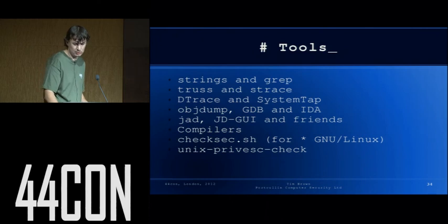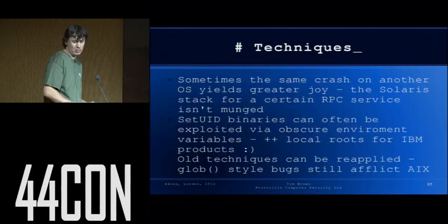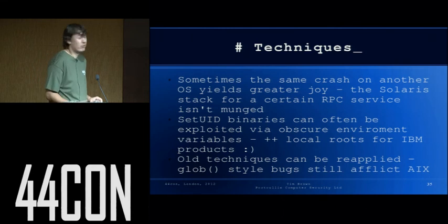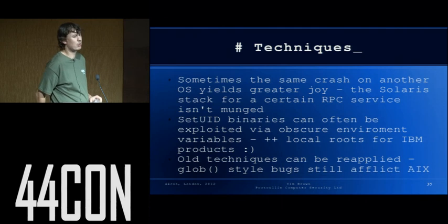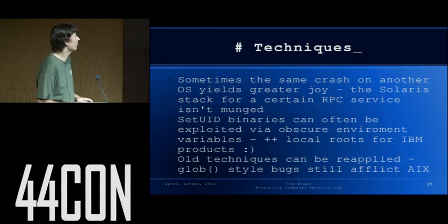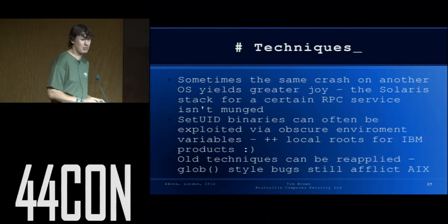Some techniques. Sometimes if you recreate the crash on another OS you might get more joy with it. Binaries can always be exploited via environment variables — that's definitely the case on IBM. We've got at least three local root exploits that are essentially based on applications that poorly trust environment variables and do silly things with them. Old techniques can be reapplied — the glob-style bugs still affect AIX because they simply didn't patch it when other people did.